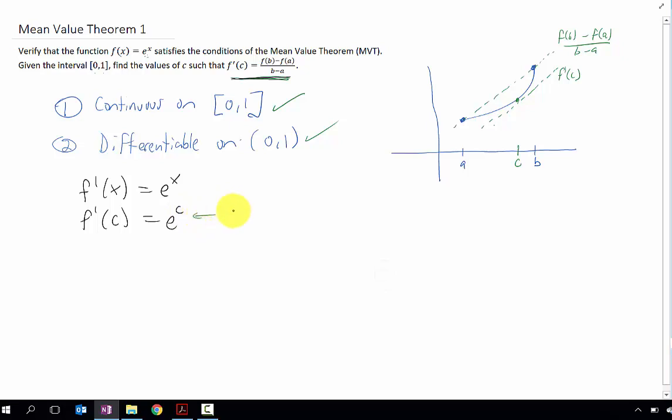And that right there is the slope of our tangent line at x equals c. Now let's find the slope of our secant line. That's going to be f of one minus f of zero over one minus zero. And using our function, we get e to the one minus e to the zero over one minus zero is just one.